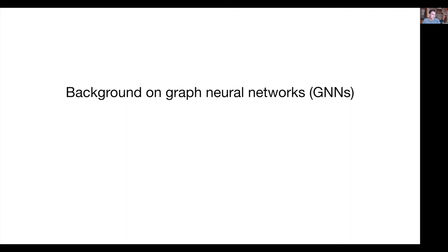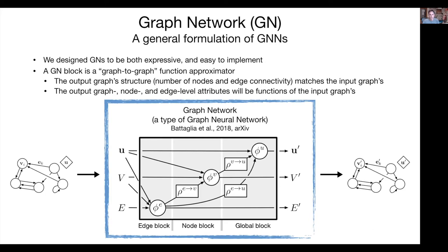I need to give some quick background on graph neural networks first, since most of what I'll talk about involves them. A graph neural network is a type of deep learning architecture that takes as input a graph and predicts different attributes on the nodes, edges, or even global graph-level properties. You can have graphs with multiple edges between nodes going into this graph network — think of it as a black box — and it outputs global-level, node-level, or edge-level predictions.